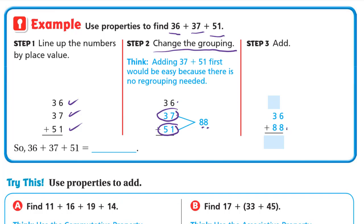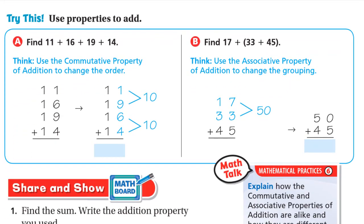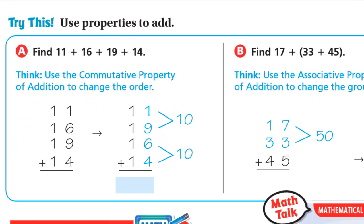But if you add 37 plus 51 first, 7 plus 1 is 8 and 3 plus 5 is 8, so 88 — no regrouping needed. After getting 88, add 36: 6 plus 8 is 14, write 4 down and carry 1; 3 plus 8 is 11, plus 1 is 12. So the answer is 124. The reason we chose 37 and 51 is that they add up without regrouping.